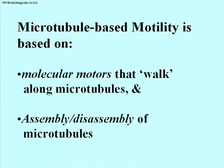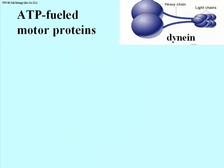Microtubule-based motility is predicated on molecular motors that walk along microtubules, and in some cases on the dynamic nature — in fact the instability — of microtubules. Motor proteins require free energy, so they're all ATP-fueled. Dynein is an example of such a motor protein with multiple domains made up of several polypeptides. Dynein functions in cilia and flagella of eukaryotic cells, but also as a molecular motor carrying vesicles in a neuron.